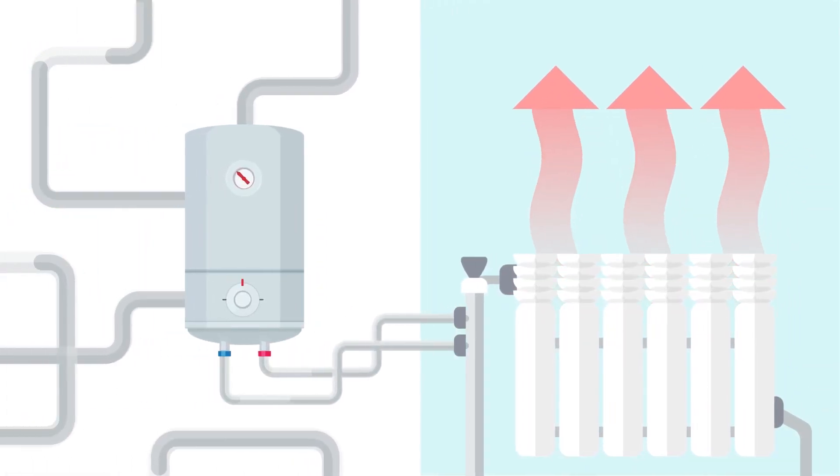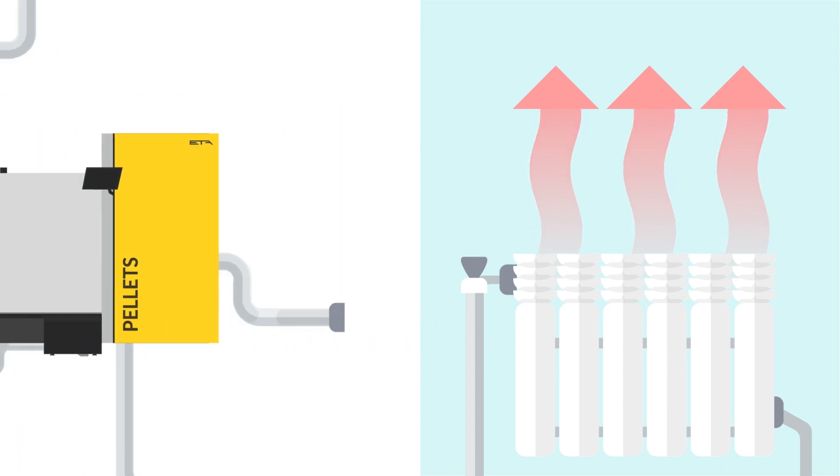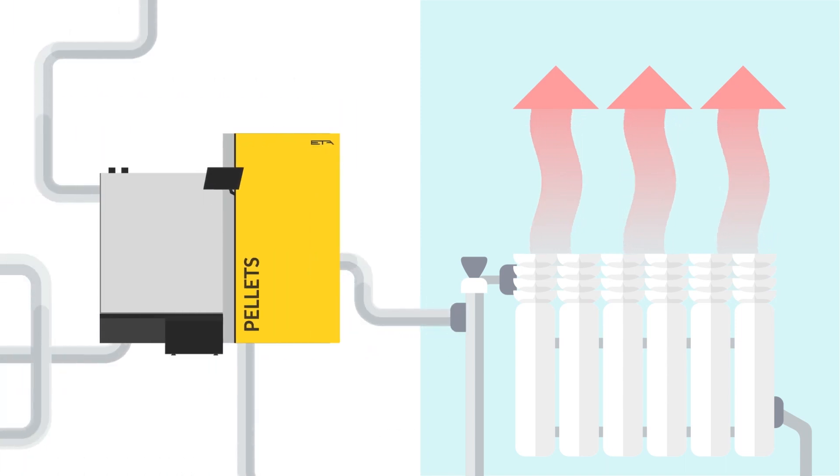If you currently use gas, oil or even coal, a biomass boiler can be plumbed right into your existing heating system, meaning you won't need to replace your radiators or piping.